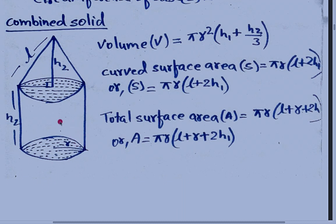Here H2 means the height of the cylinder, and H means the height of the cone, while L means the slant height of the cone. Using this information, we will find the requirements of the problem related to the combined solid.